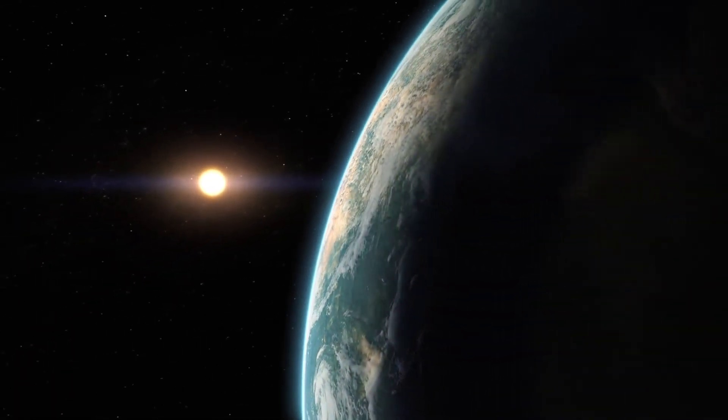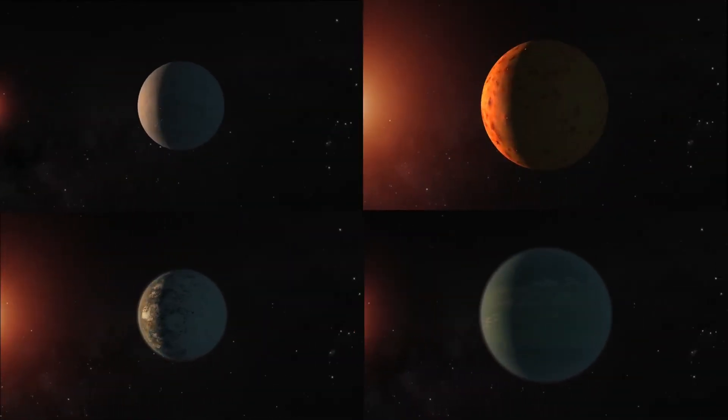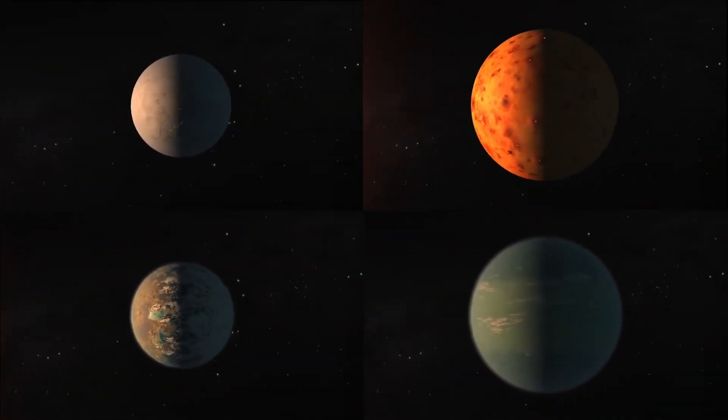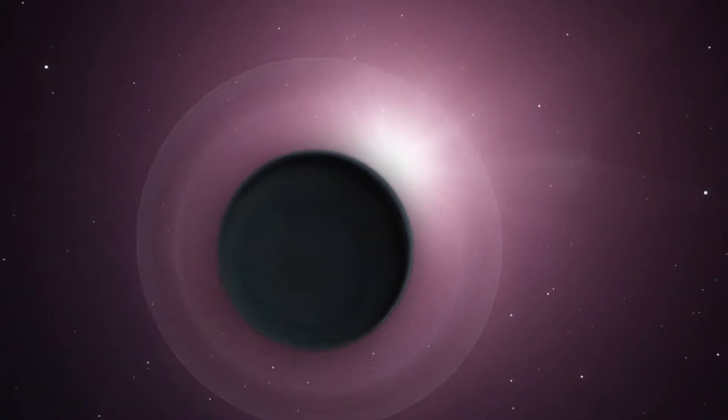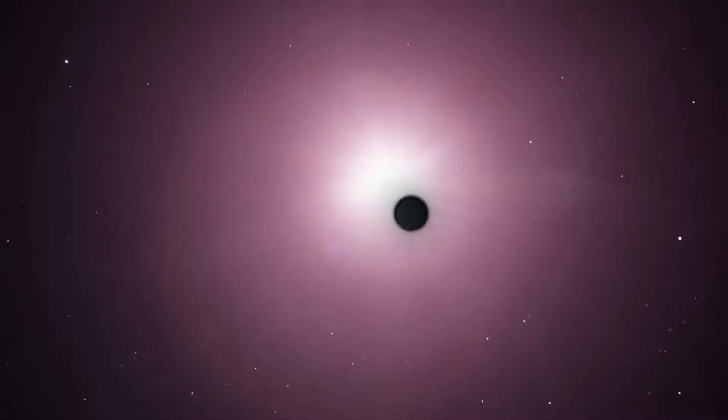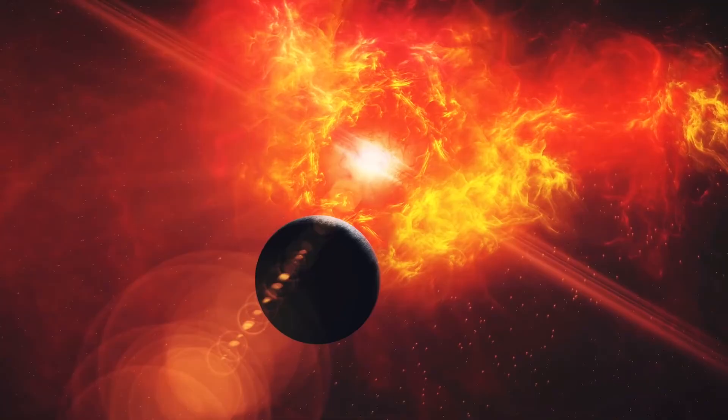The star's brightness decreases during the beginning of a transit by the amount of its disk that is obscured, then rises once again after the planet departs. Even though it is so slight, that apparent decrease in the star's brightness gives us access to the same technique that Kepler employs to find planets around other stars.